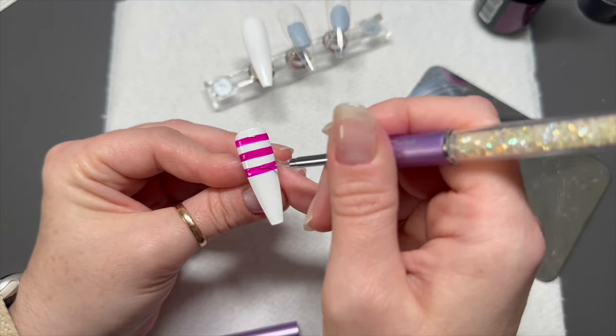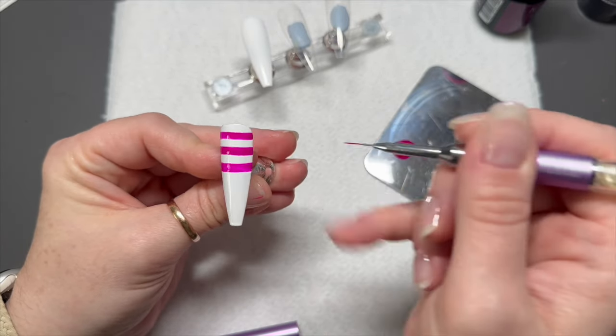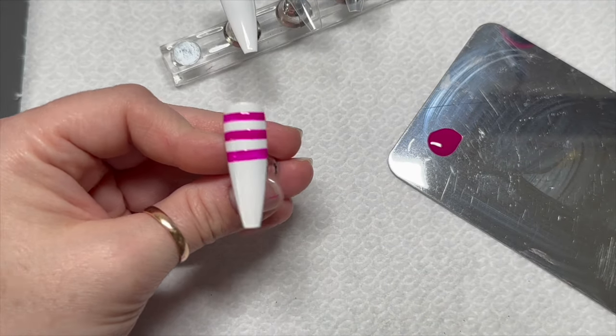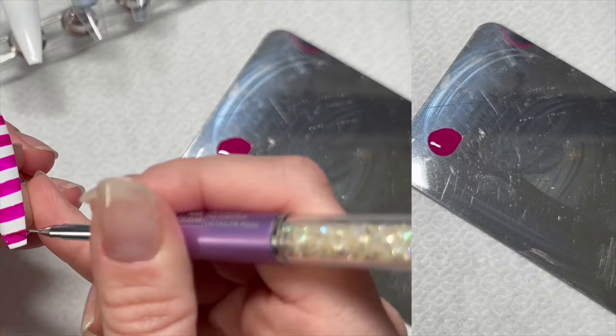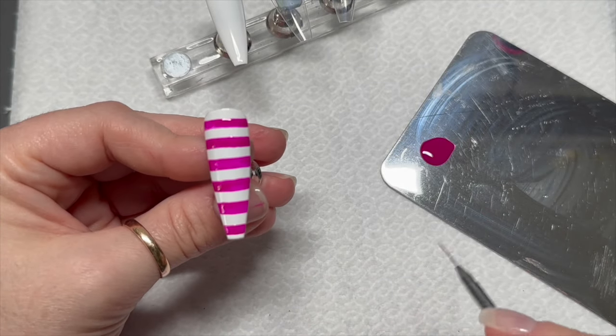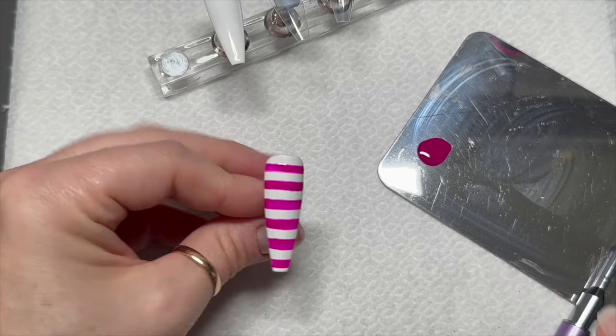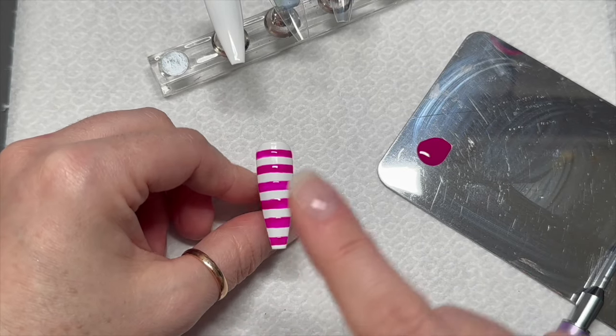For both of these nails I'm going to do these little horizontal stripes all the way down the nail. I got six lines on there in the end. I'm going to pop that in the lamp and then do exactly the same on the second nail, so we've got two stripy nails.